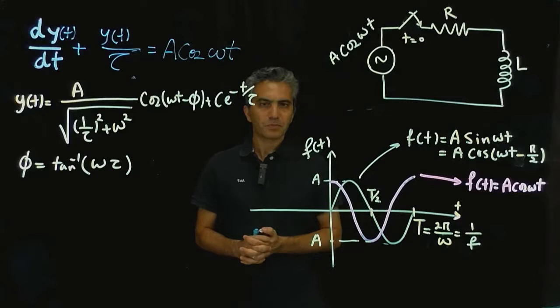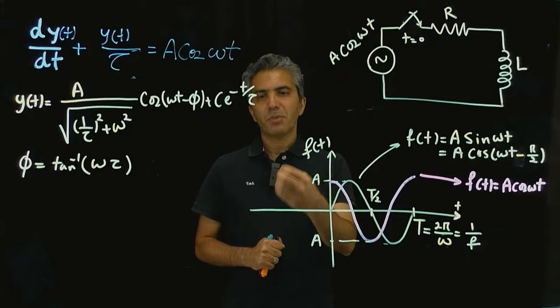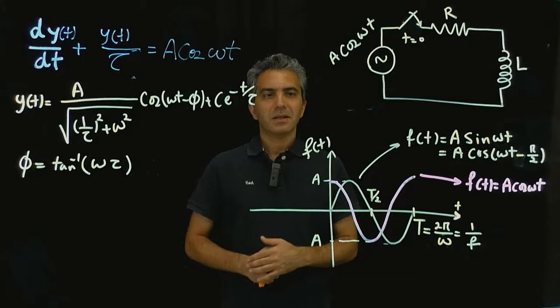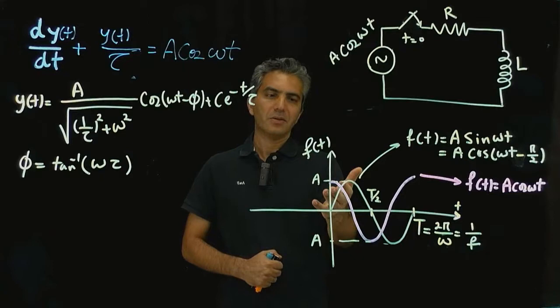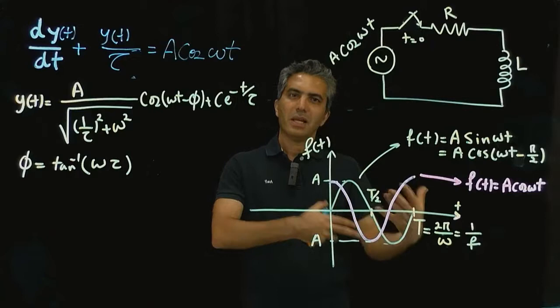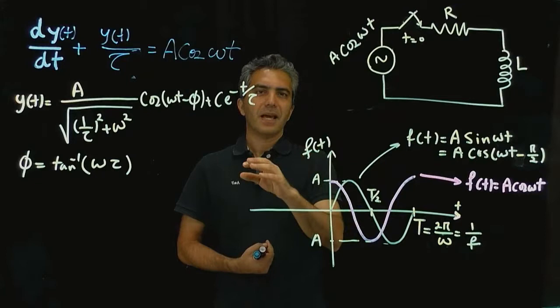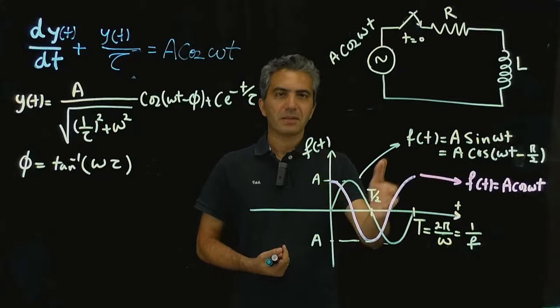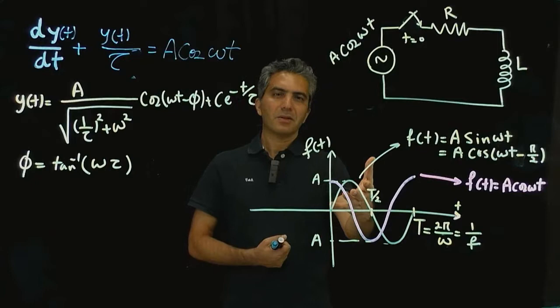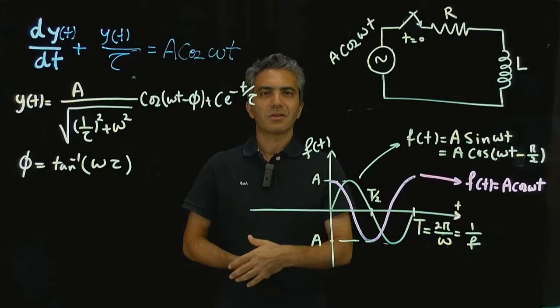Why would sinusoidal signals show up everywhere and why do we care about them so much? One of the things to consider is that the type of signal generated in power electronics — where generators turn a different form of energy into electrical energy — is very much in the form of an alternating voltage or current, which can be approximated by a sinusoidal signal.